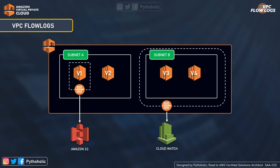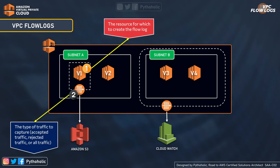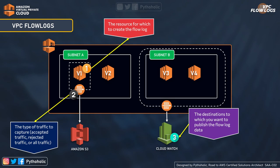Any event that occurs in these entities will generate entries containing information about what exactly happened — that piece of information is called a log. The flow log data for a monitored network interface is referred to as flow log records. To publish logs, keep three steps in mind: first, the resource for which to create the flow log (instance, subnet, or VPC); second, the type of traffic to capture (accepted, rejected, or all); and third, the destination — either S3 or a CloudWatch log stream.